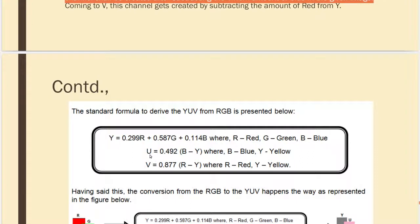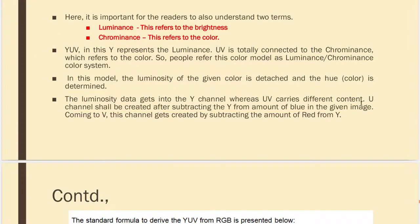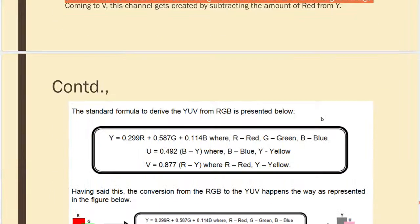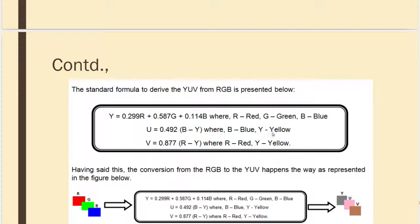U is obtained by (B − Y) × 0.4492, where B is blue and Y is the luminance. V is obtained by 0.877 × (R − Y), where R is red and Y is the luminance. This is the formula to derive YUV out of RGB. It is all about how you get U from blue and Y, and V from red and Y.